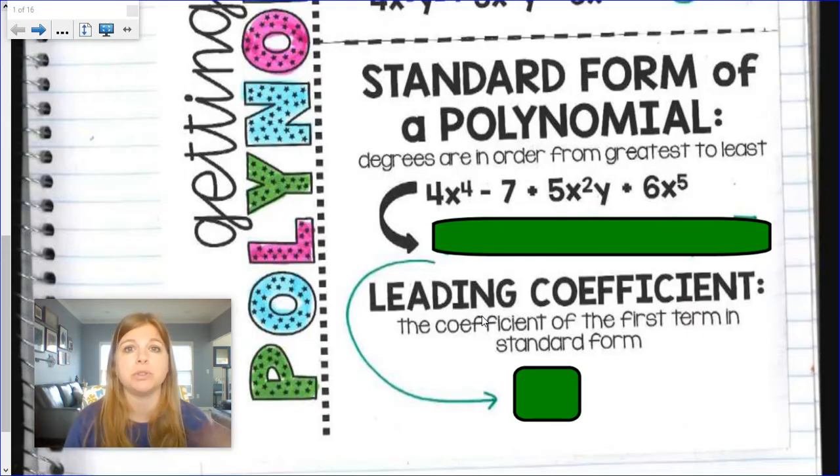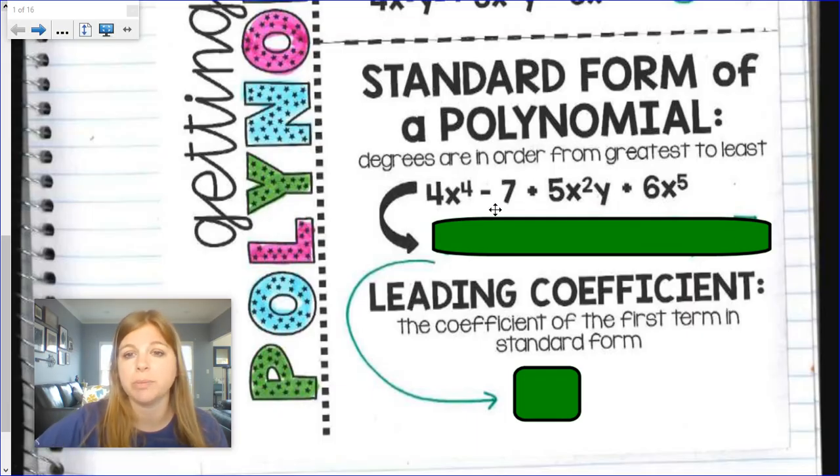The highest degree to the lowest degree. Kind of like if you were told to line up in your classroom. You were told that you have to line up highest person to lowest person or tallest person to lowest person. Here, I would look at this 4 term poly. The first term has a degree of what? 4.